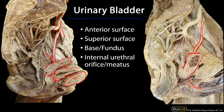This urinary bladder is intermediate between the pubic symphysis, and posterior to that urinary bladder we're going to have the seminal vesicles, which are going to join with the ductus deferens to form the ejaculatory ducts, which are going to feed into the prostatic part of the urethra.